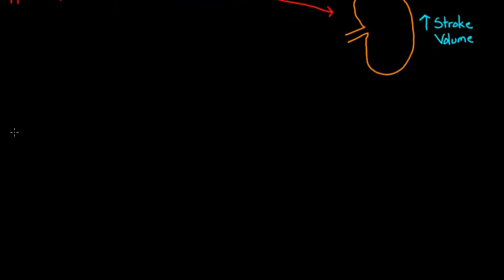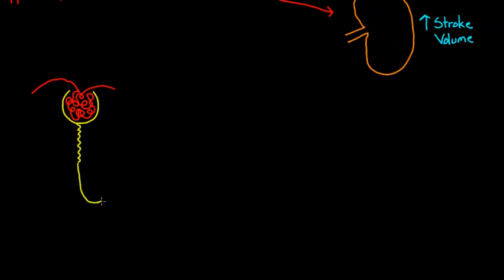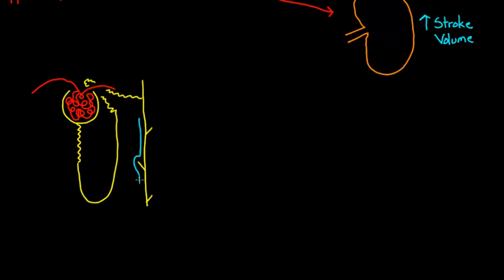I'm going to draw out the efferent and afferent arterioles. Blood is going to enter the kidneys and kind of twist on itself in the glomerulus. There's the proximal convoluted tubule, the loop of Henle, the distal convoluted tubule, and finally the collecting duct. This is basically what the nephron looks like. The important part I want to label is the collecting duct — that's the area that ADH is actually going to work on.